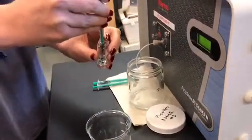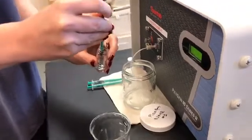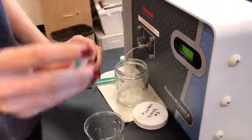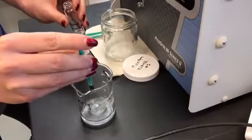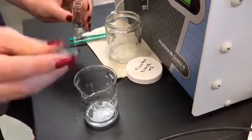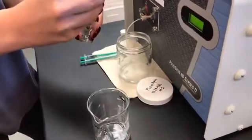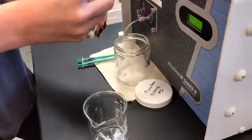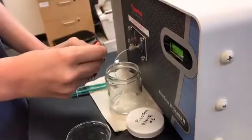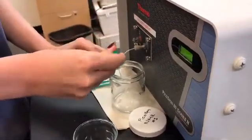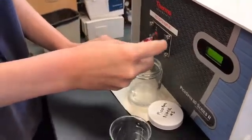Again, take up some sample into the syringe. Once again, just put it in the waste beaker. And then the third time, I'll be actually using this sample for my NMR. So I'll take up about 0.4 milliliters of my sample.